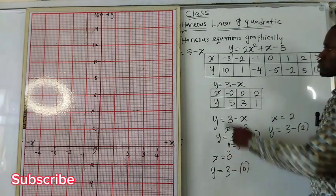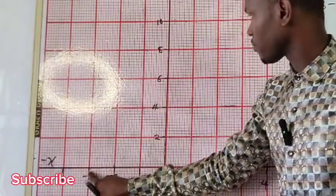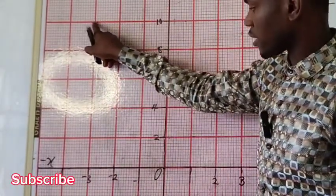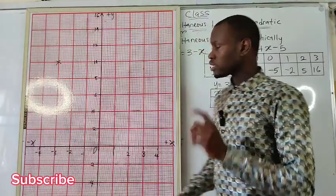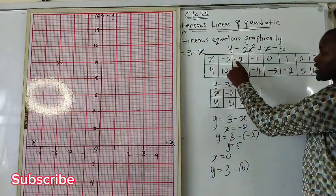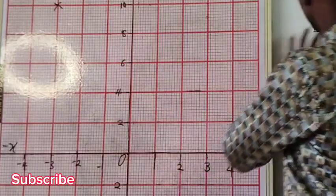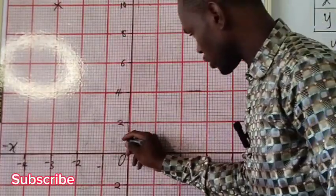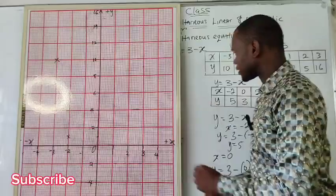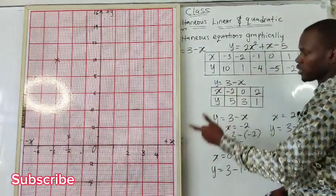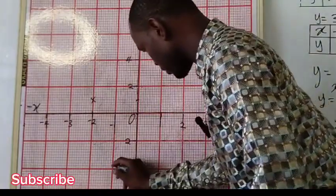Now we plot. For the point negative 3 and positive 10: negative 3 on the x-axis and positive 10 on the y-axis — their intersection is marked with an asterisk. For negative 2 and positive 1: locate negative 2 on x, positive 1 is halfway between 0 and 2 on y — mark the asterisk. For negative 1 and negative 4: locate negative 1 on x, negative 4 on y — mark the asterisk.